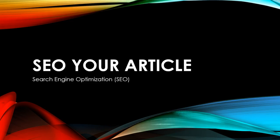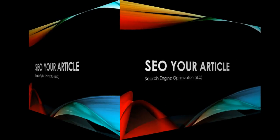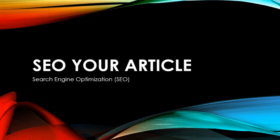Dear friends, in this video lecture I am discussing with you about SEO for your article. What does it basically mean? This is related to the optimization of your research paper for the search engine. I will discuss here what search engine optimization is and how to optimize your research article for different search engines — this might be helpful for your research article.